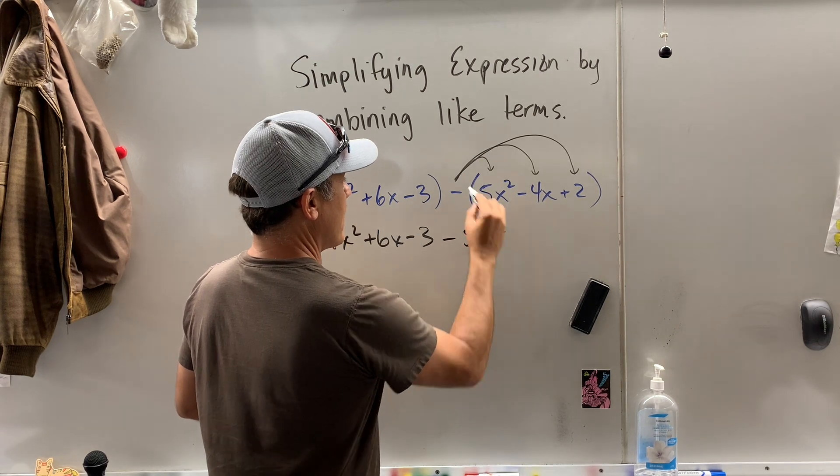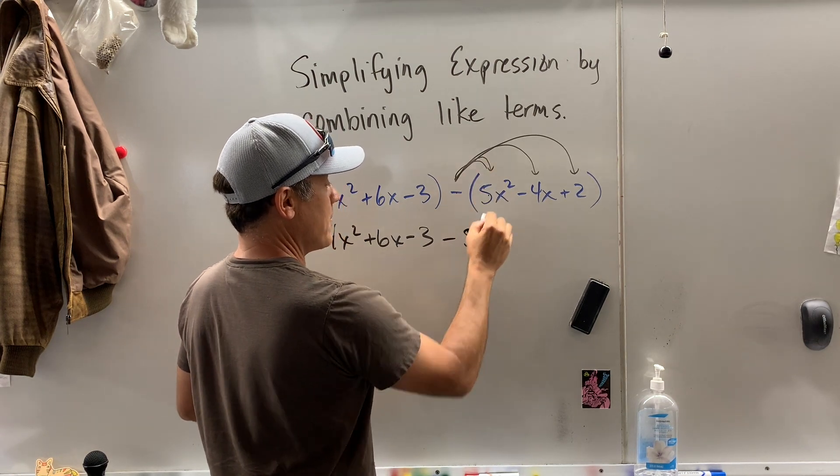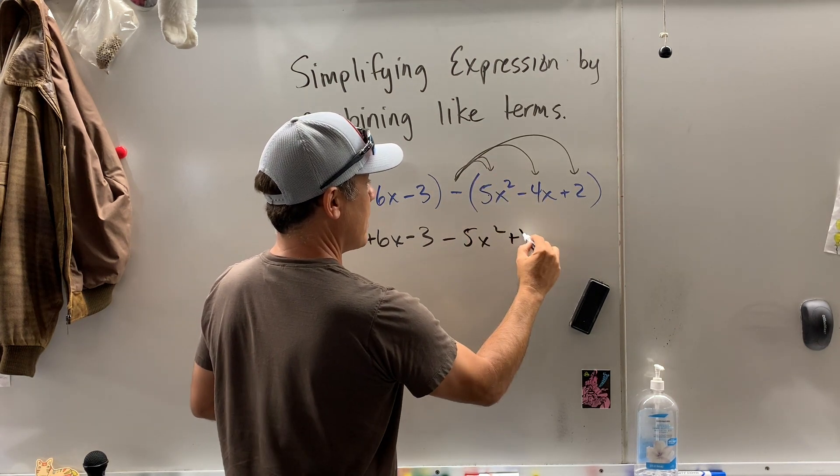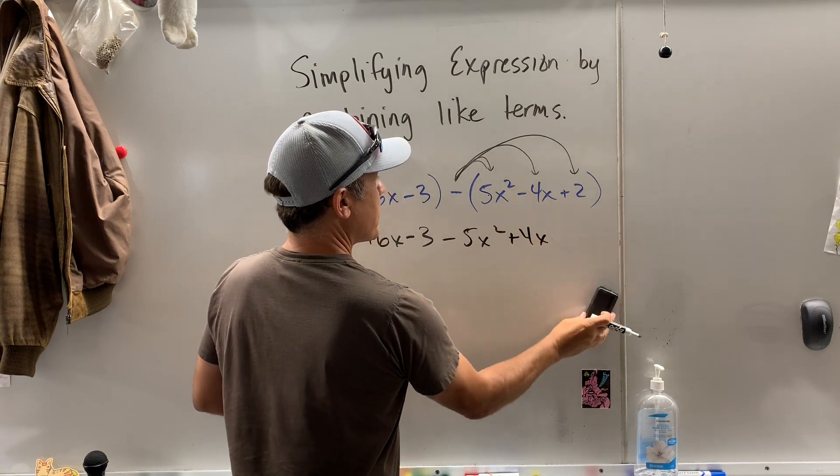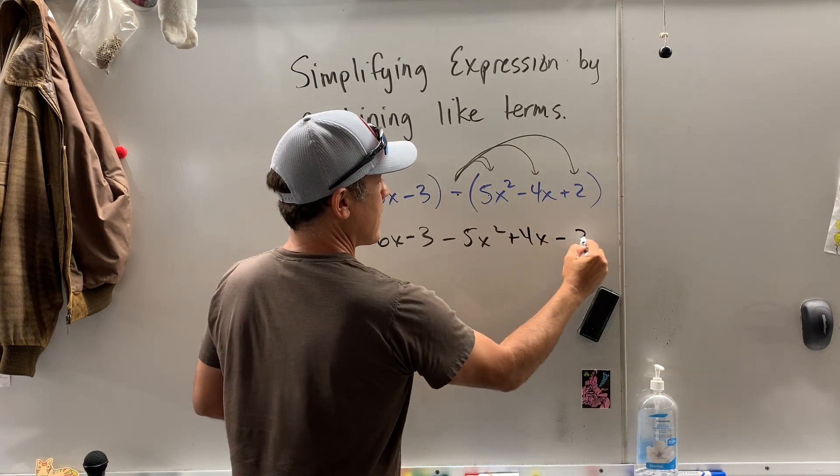Negative 5x squared, see negative times 5 is negative 5. Negative times the negative is plus, oops, it's not a square, and then negative times the plus is negative 2.